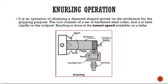Knurling is defined as an operation performed on the lathe to generate serrated surfaces or diamond-shaped grooves on the workpiece using a special tool called a knurling tool. The tool consists of a set of hardened steel rollers held rigidly against the workpiece with high pressure. Knurling is done at the lowest speed available on the lathe.